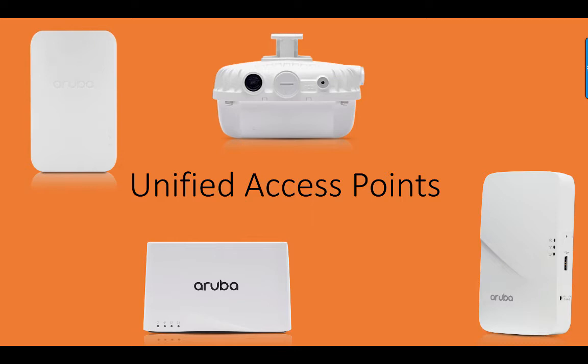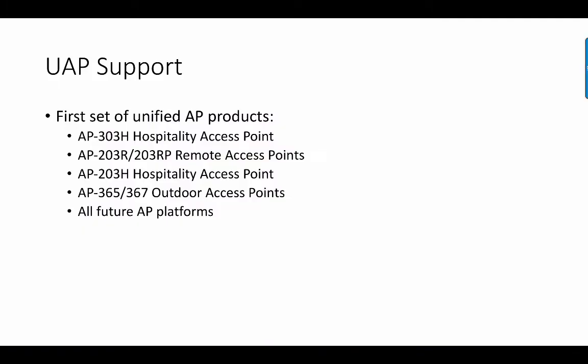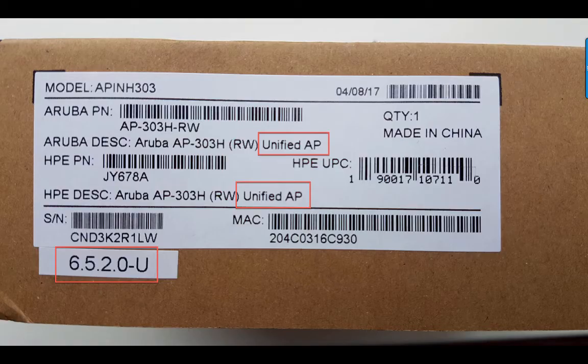On this slide you can see the first four products that ship with this UAP image: the 303H, the 203R and RP, the 203H, and the outdoor AP 365 and 367. All future AP platforms will ship as a Unified Access Point. You can identify them on the sticker on the box and also on the product itself.